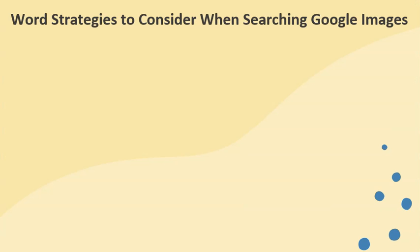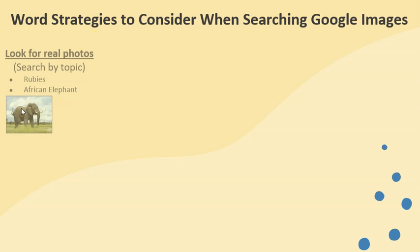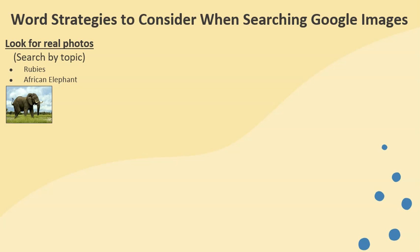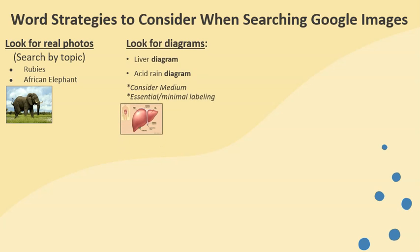Let's examine some word strategies to consider when searching Google Images. For real photos, simply search by your topic name — if your topic is on rubies, type in rubies; if your topic is on African elephants, type in African elephant. For diagrams, you can type in things like liver diagram, or even acid rain diagram, and it will probably show you a diagram of how acid rain forms. For diagrams, consider medium images and find ones that have only essential and minimal labeling.